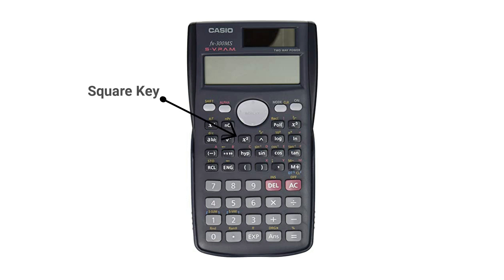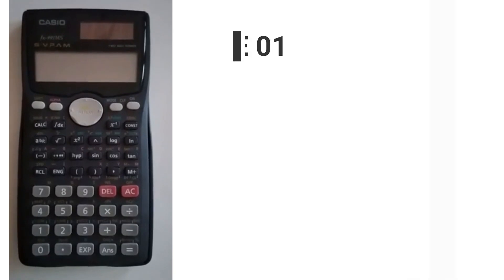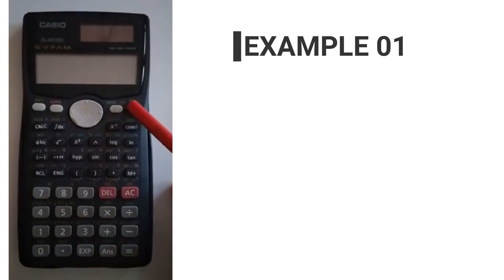These are the number keys. This key is used to get the square, whereas this gives the square root. Now let us see how to perform some mathematical operations using the scientific calculator and the order of pressing the keys. Let's see the first example.